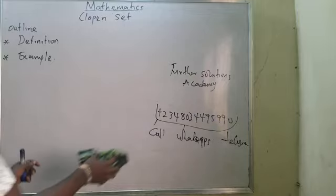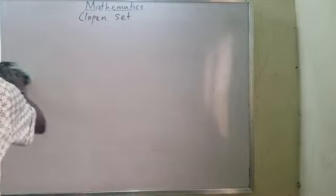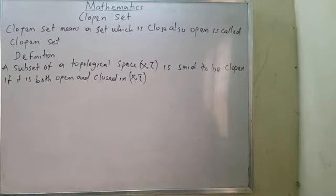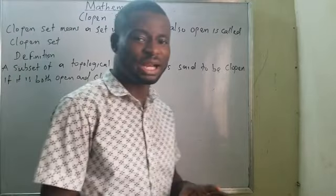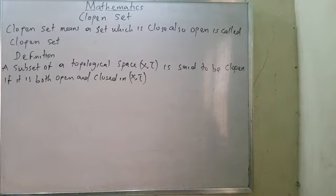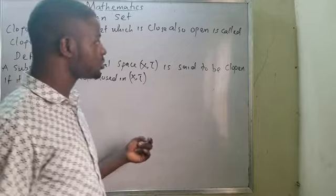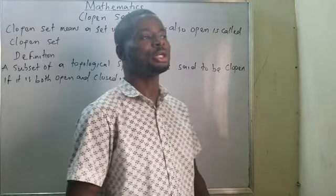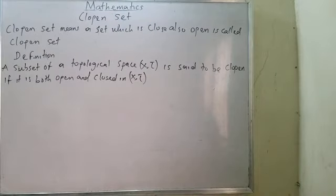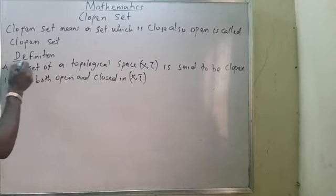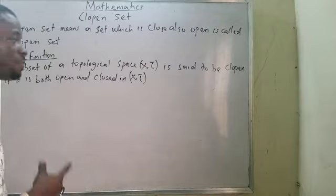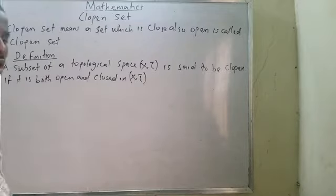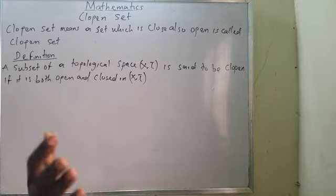Let me quickly give the definition of clopen. To put it plainly, for someone who may not be familiar with mathematics: a clopen set means a set which is both closed and open — it is closed and also open. By now, you should know how to generate closed sets and open sets from our previous video. A subset of a topological space is said to be clopen if it is both open and closed in that topological space.